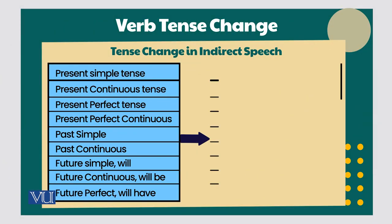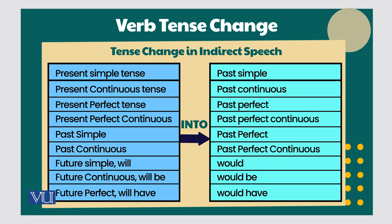The rules of conversion are fixed. Simple present tense will convert into past tense. Present continuous tense will change into past continuous tense. Present perfect tense will change into past perfect tense when you are reporting indirect speech. Similarly, when reporting a future sentence where you use 'will' and 'shall,' they will turn into 'would' and 'should.' If you are writing future continuous tense using 'will be' or 'shall be,' it will be converted into 'would be' and 'should be.'